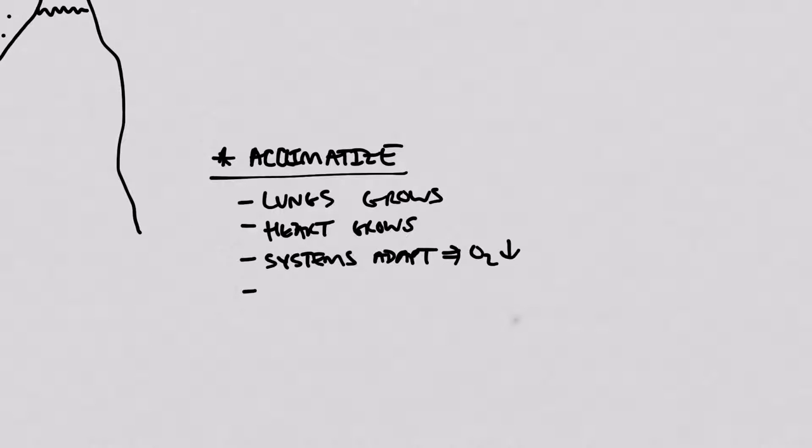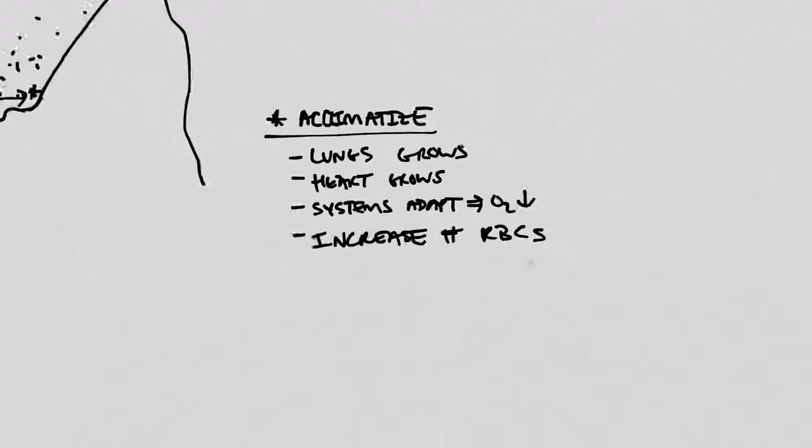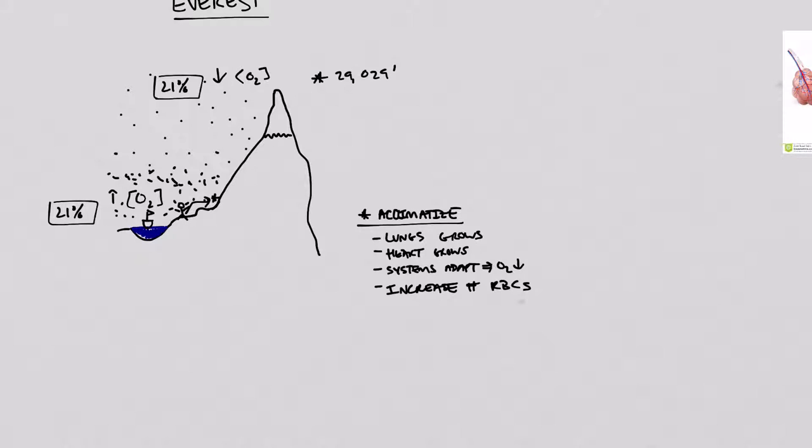And the last thing that happens is that there's an increase in the number of red blood cells produced, and this means that more oxygen can be delivered to the tissues. So as people are acclimatizing, these changes are happening in their body.